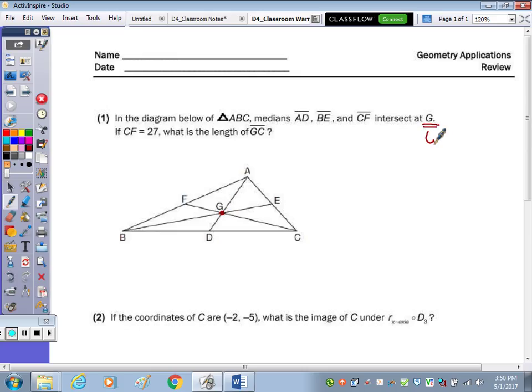So that means G is called the centroid of the triangle. The centroid is the point where all three medians meet. Now if CF is 27, so that means this whole length is 27, what is the length of GC?